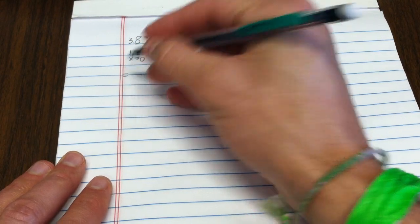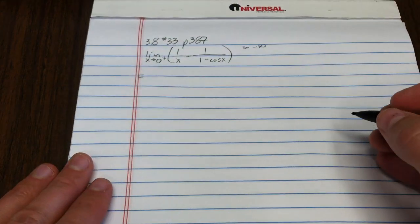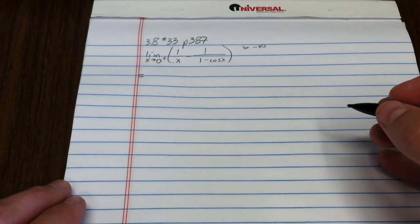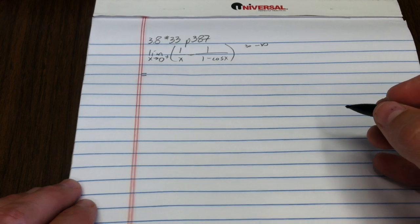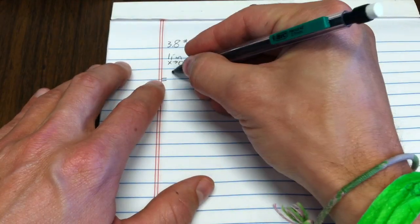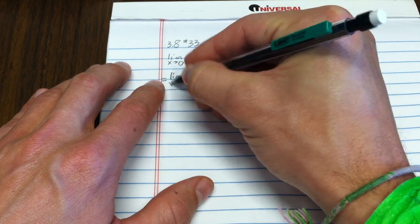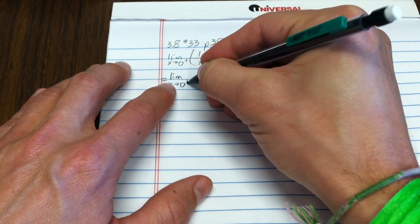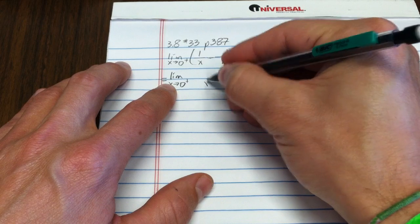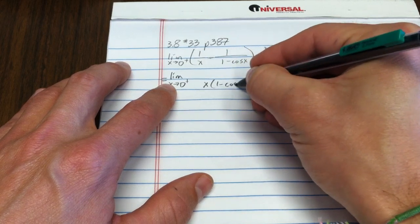So in my standard fashion, I'm going to do algebraic manipulation, then L'Hôpital's, then likely more algebraic manipulation. Let's leave my limit alone. I have two fractions. I'm going to get a common denominator, x times 1 minus cosine x.